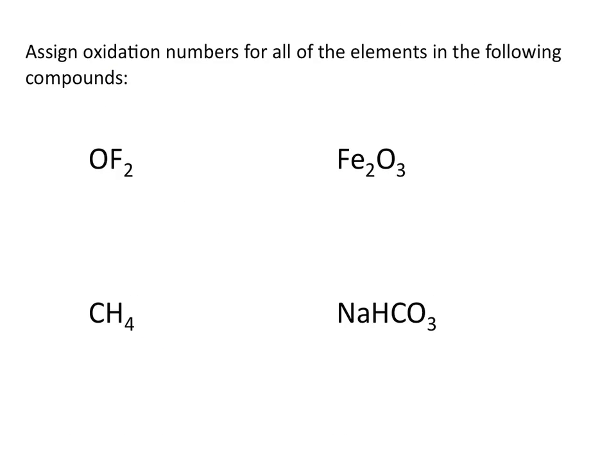Let's look at some examples. Assign oxidation numbers for all of the elements in the following compounds. Looking at our first compound, OF2, we know that we need to assign the oxidation number for the most electronegative element first, and that would be fluorine. Fluorine has an oxidation number of minus 1. But there are 2 fluorine atoms, so I write the oxidation state right below the atom in the compound, and then multiply it by the subscript on that element, for a total of negative 2. Remember that the sum of the oxidation numbers must equal the overall charge on the compound. So for OF2, the sum must be 0.